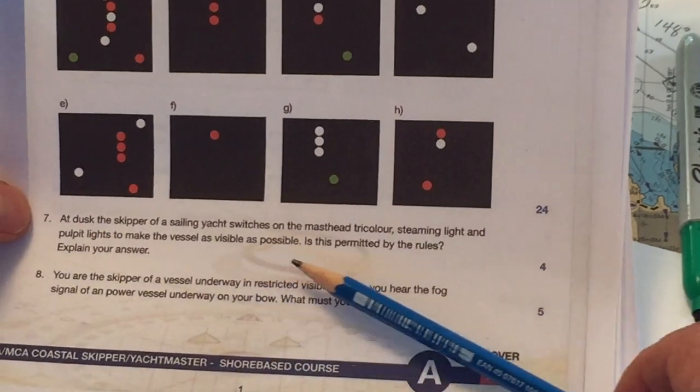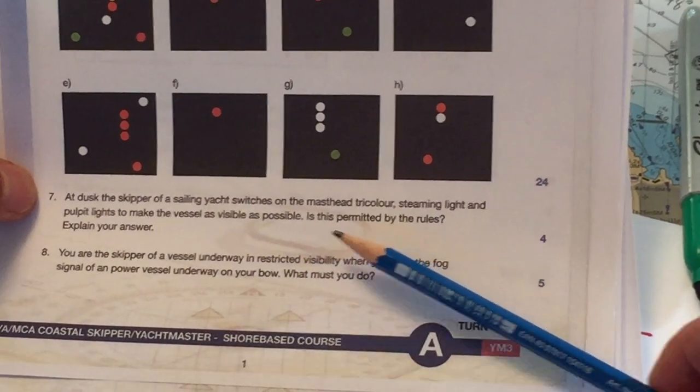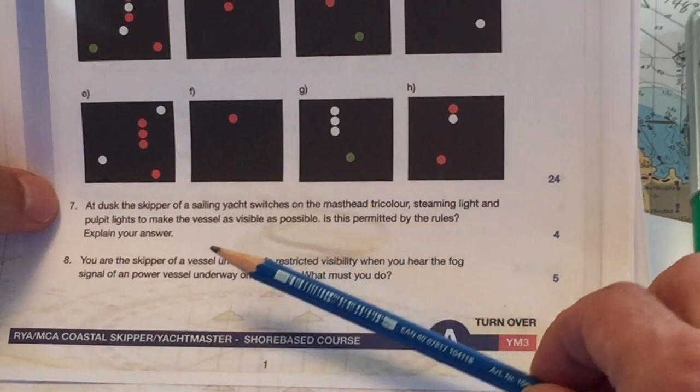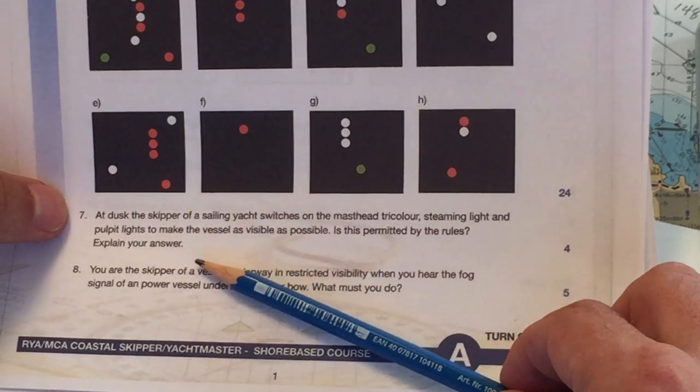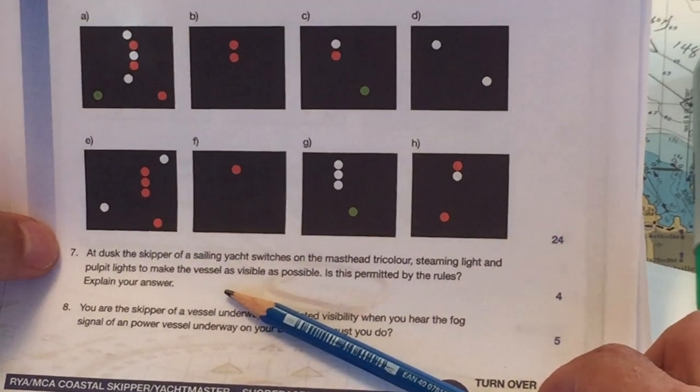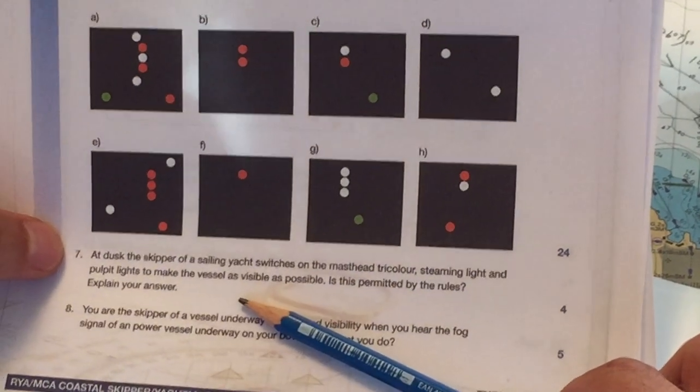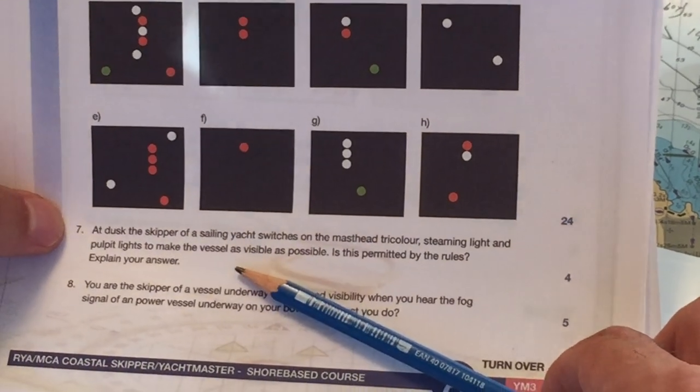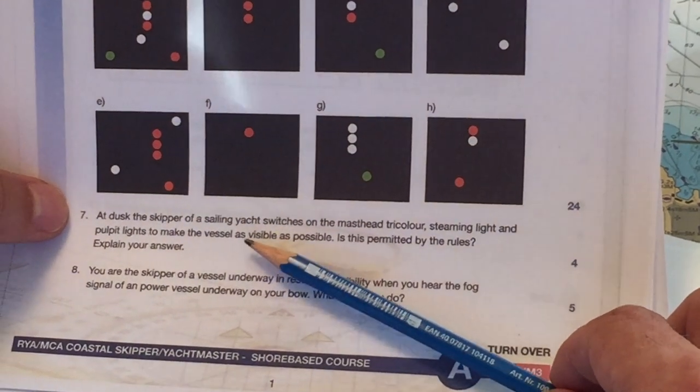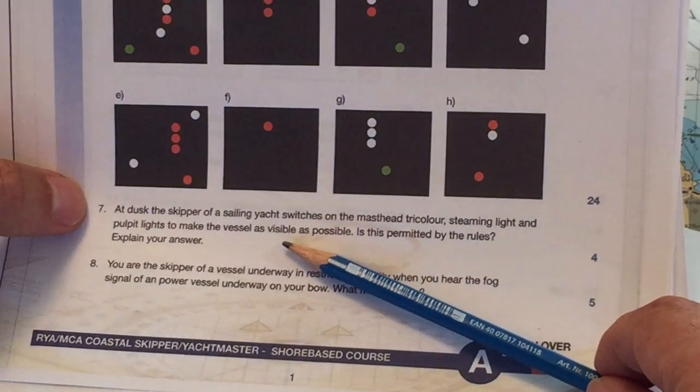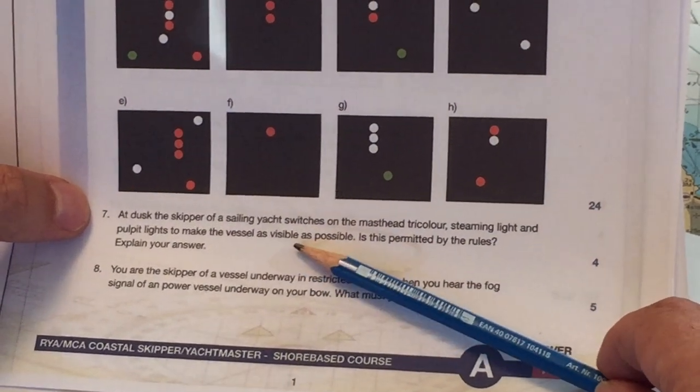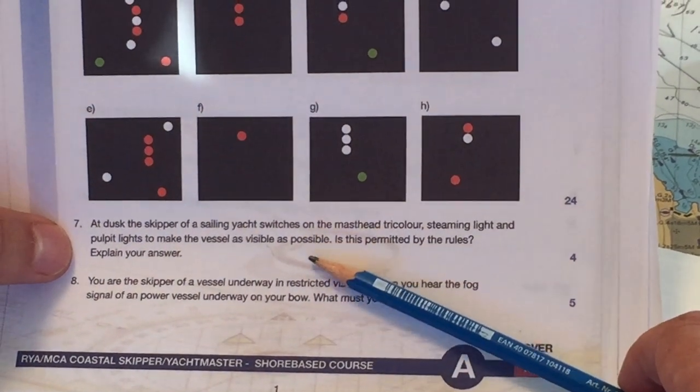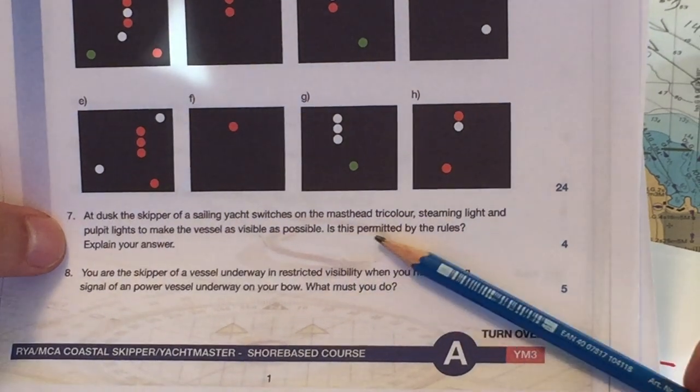At dusk, the skipper of a sailing yacht switches on the masthead tricolor steaming light and pulpit lights to make the vessel as visible as possible. Is this permitted by the rules? Instinctively I'm saying no, definitely not. There's a reason why the COLREGS prescribe lights for vessels, because they are then identifiable. If you turn on lights that are not prescribed in the COLREGS, then, as far as I'm concerned, you're setting up a risk of collision situation. Yeah, so I would, I would say no, stick to the lights you're supposed to have on, as outlined in the COLREGS.